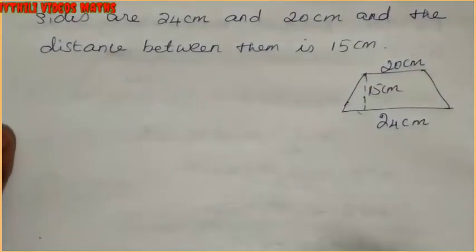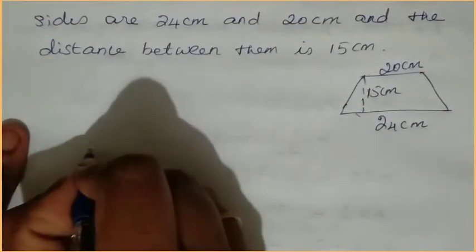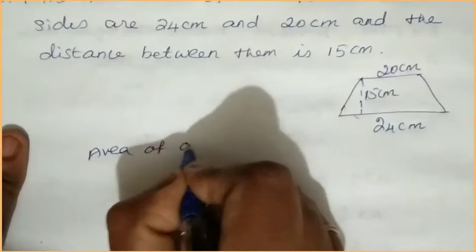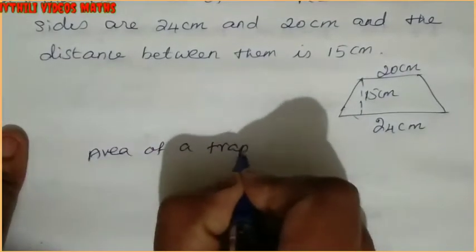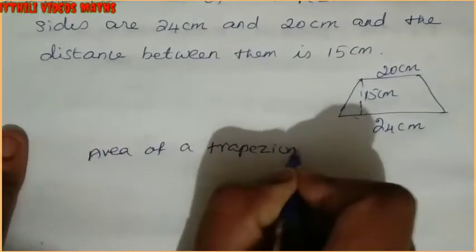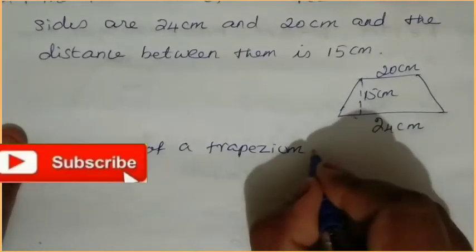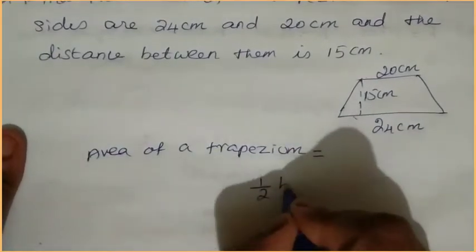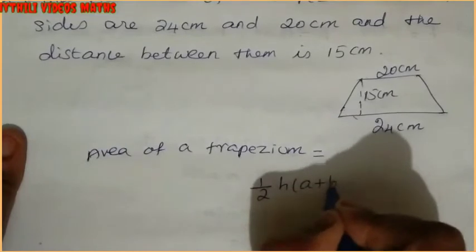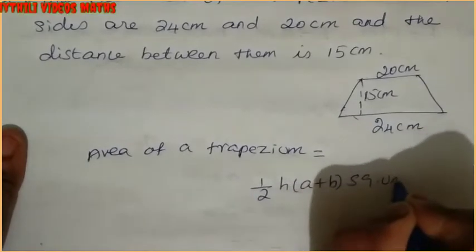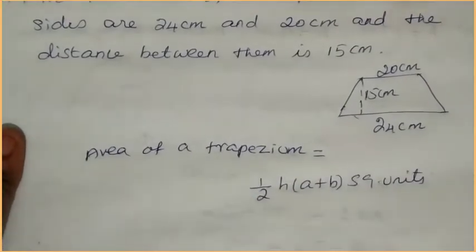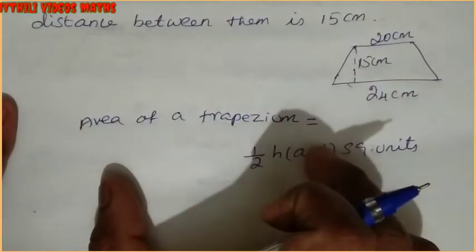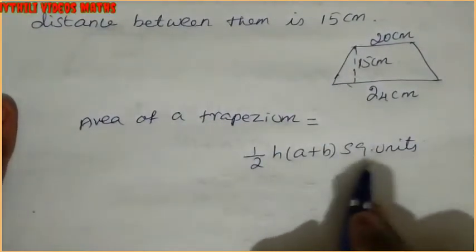We have to find the area of a trapezium. The formula is: area of a trapezium equals 1 by 2 × h × (a + b) square units. This is the formula. When writing the solution, you have to write the formula fully — the final unit value is very very important.